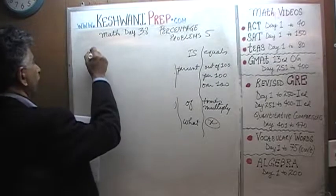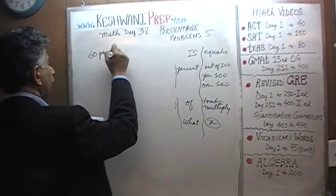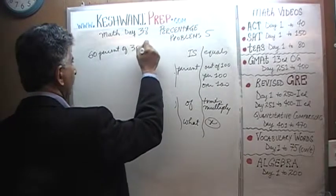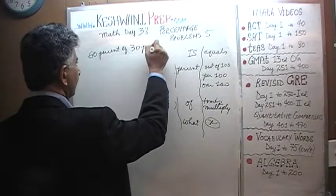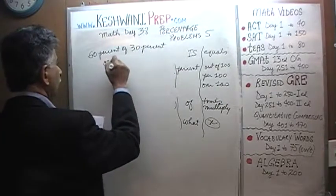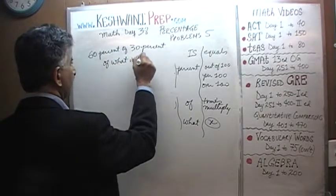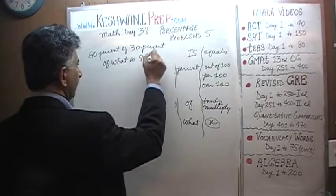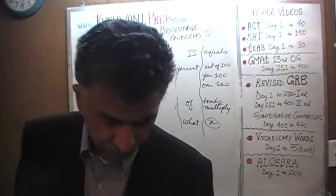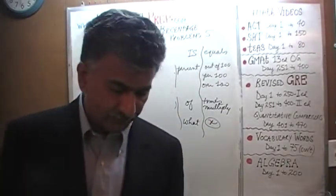Here is problem number one: 60% of 30% of what is 81.